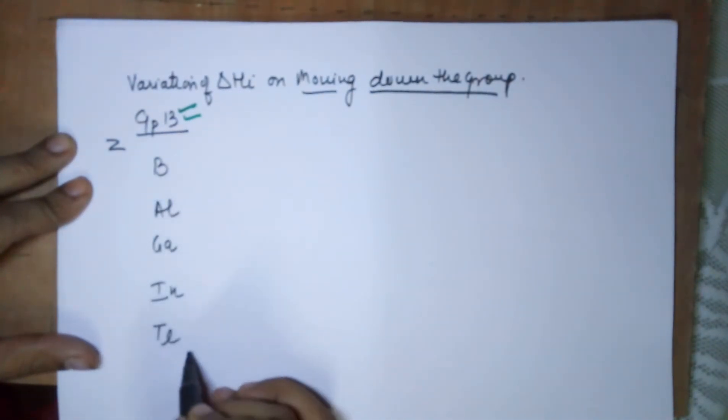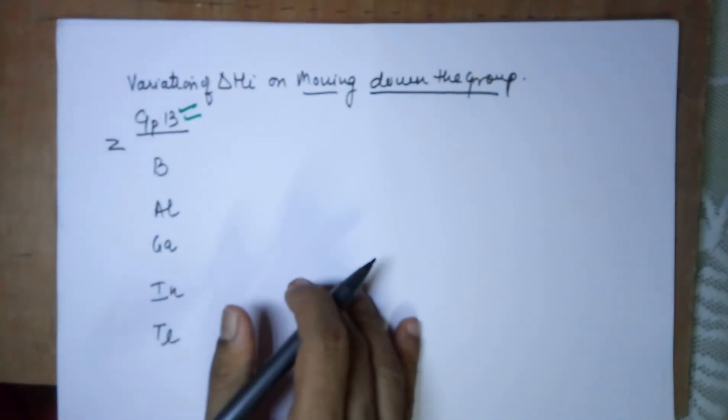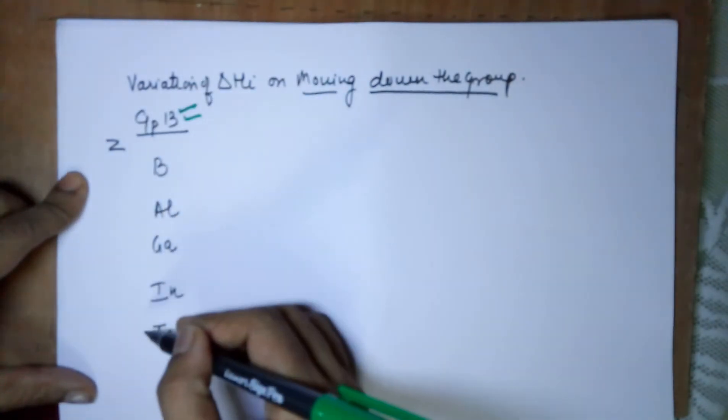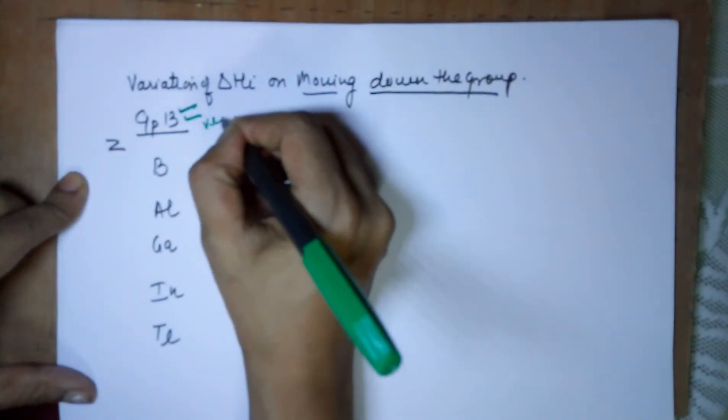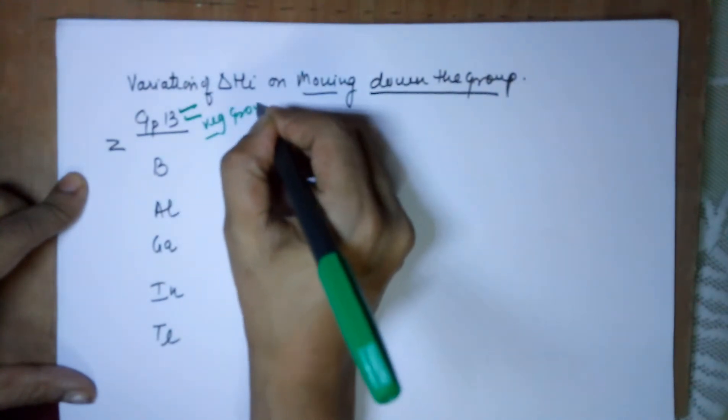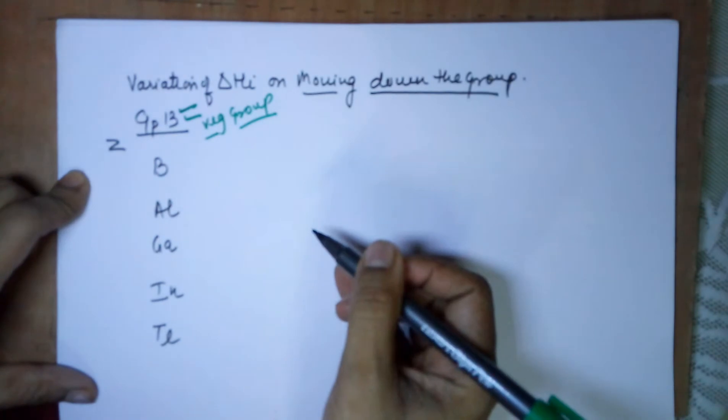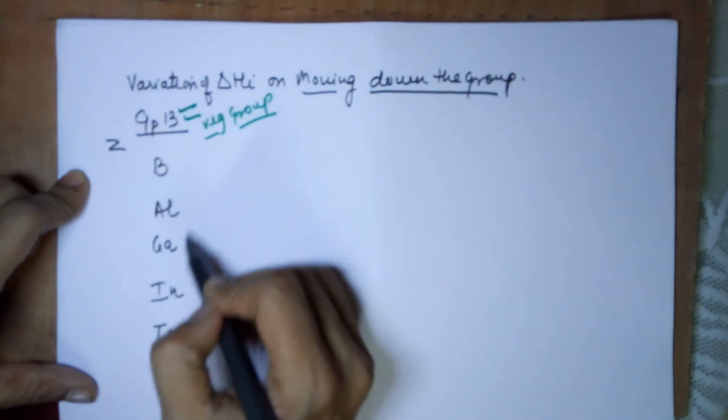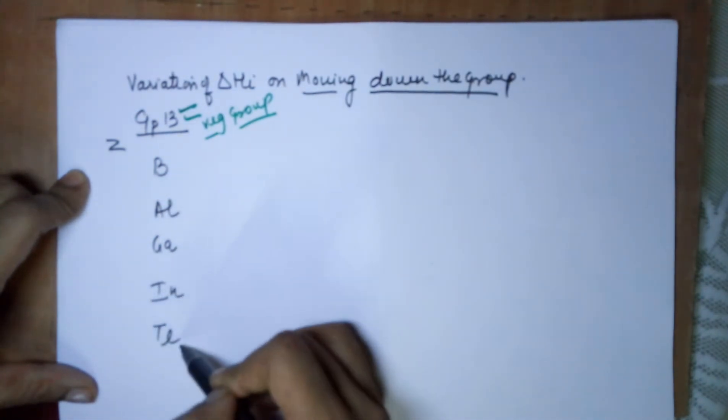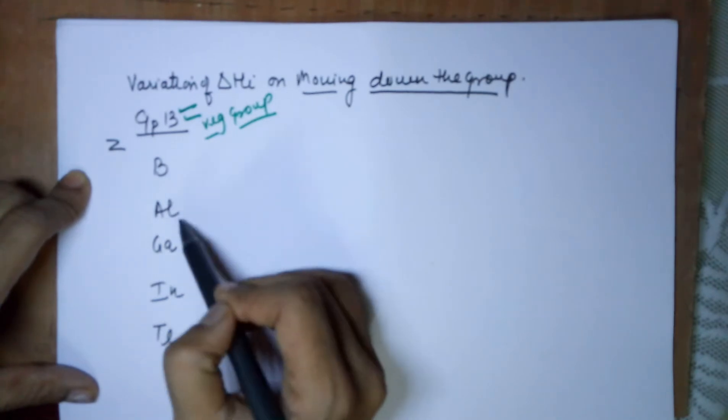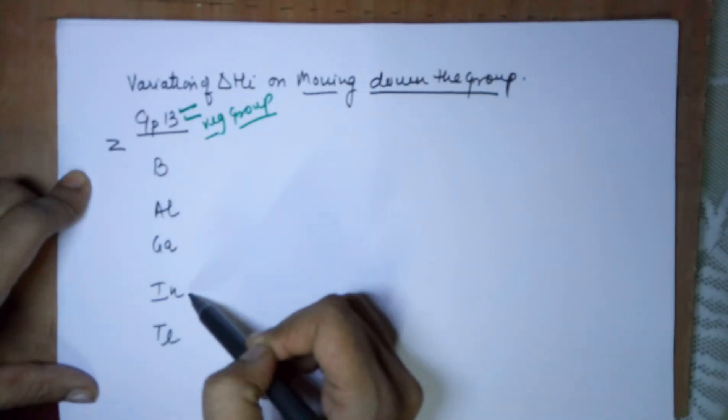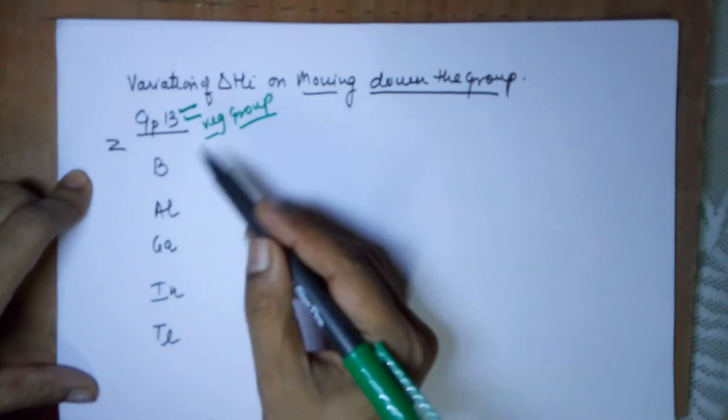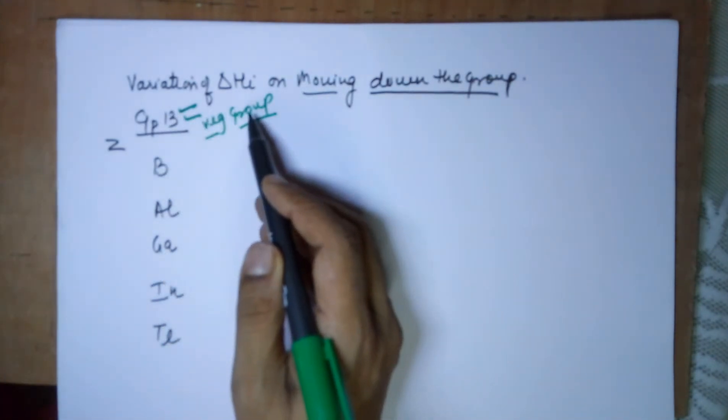For Indian students let me give you a simple way to learn group 13 members. I call it the vegetable group because I've learned it that way: bangan, aloo, gajar, in, thala. That's just a way to remember it, so I call group 13 as the vegetable group.